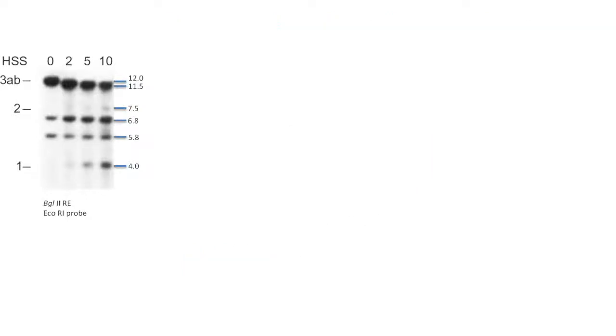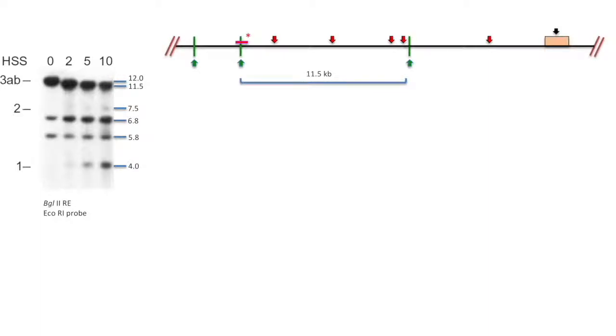If you look at the lane that is incubated with DNase for 10 minutes, we see three bands that represent hypersensitive sites. But it is actually four. The first one is 11.5 kb. So there must be a hypersensitive site that is 11.5 kb away from the restriction site, and it is labeled as 3ab.